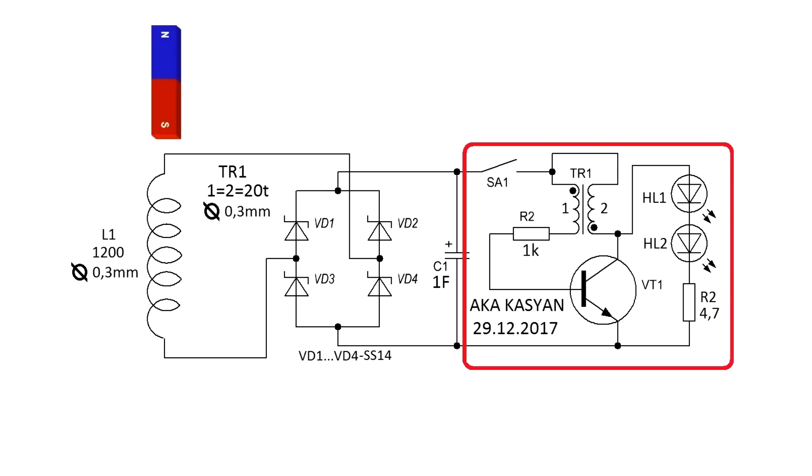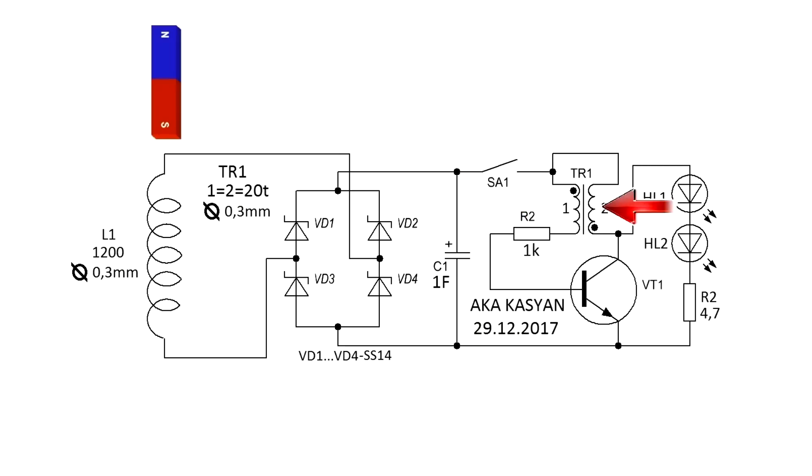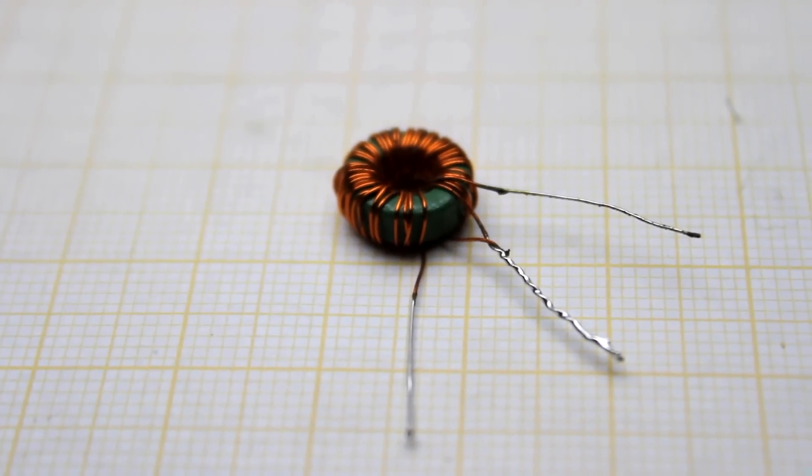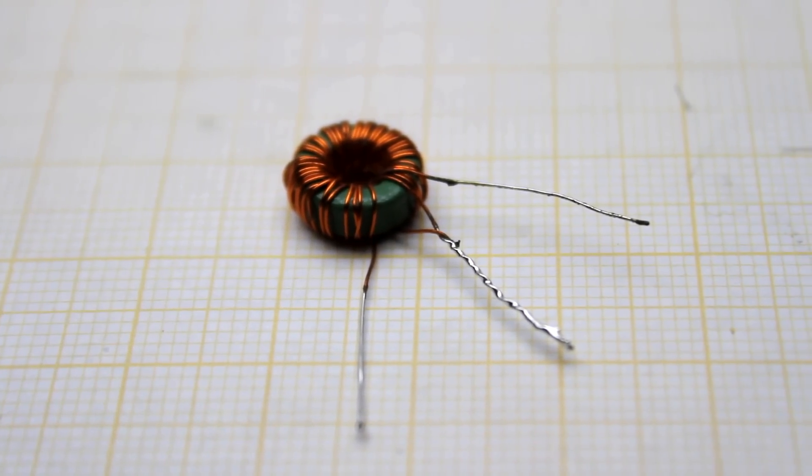It's a converter of an auto-generator type. The transformer consists of two windings. The circuit works thanks to the bursts of self-inductance of the throttle. The voltage of the self-induction can be tens of times higher than the supply voltage.